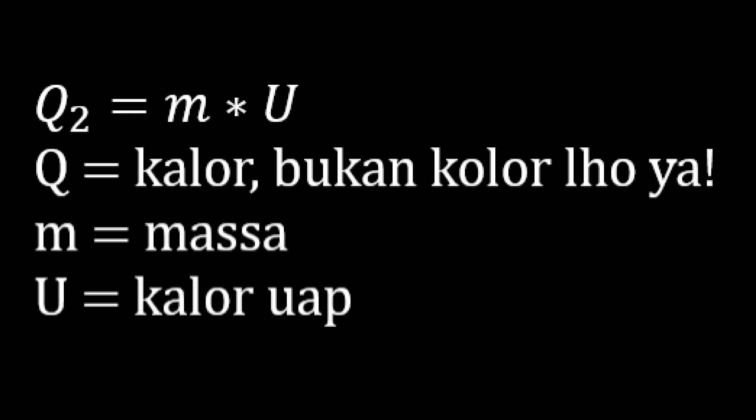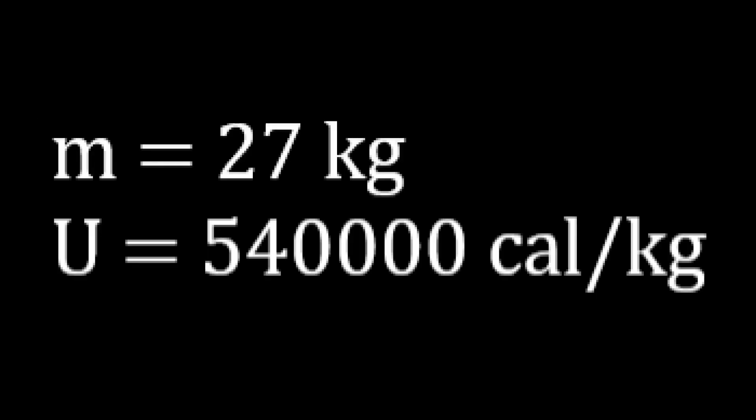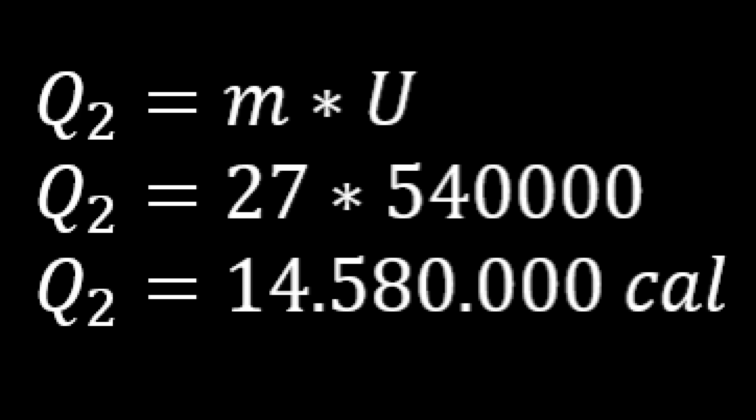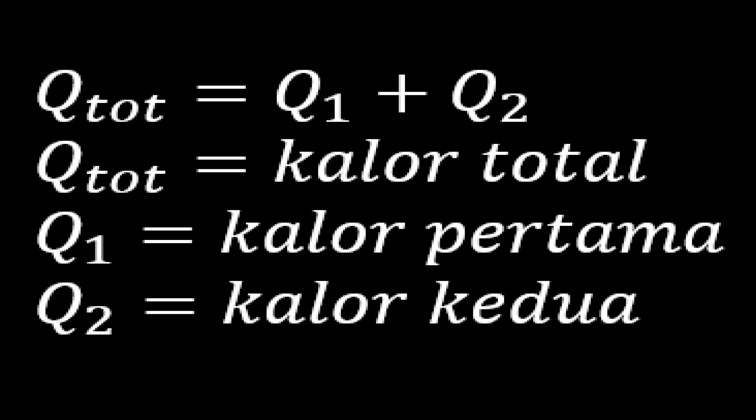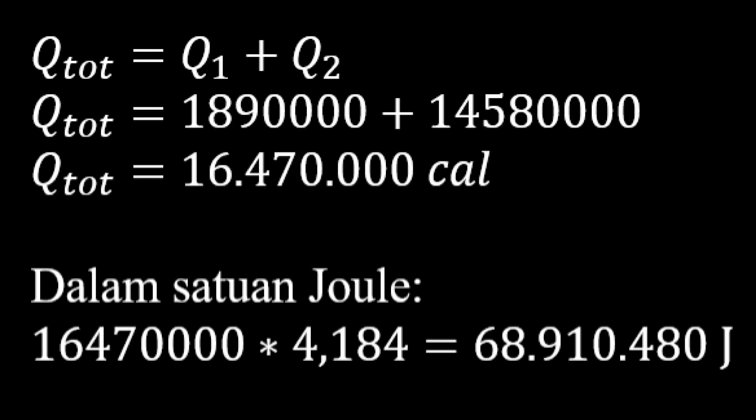Sekarang kita masuk ke proses kedua. Q2 sama dengan M x U, di mana M adalah masa dan U adalah kalor uap. Masa kita sudah tahu 27 kg, dan kalor uap air yaitu 540.000 kalori per kilogram. Jadi Q2 sama dengan 27 x 540.000, Q2 sama dengan 14.580.000 kalori. Qtot atau kalor total sama dengan Q1 + Q2, yaitu 1.890.000 ditambah 14.580.000, Qtot sama dengan 16.410.000 kalori. Sekarang kita konversikan ke satuan Joule — kalikan 4,2 — hasilnya adalah 68.910.480.000 Joule. Banyak juga nih sampai 68 miliar!